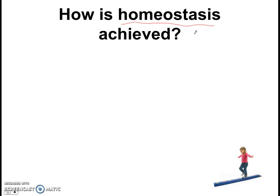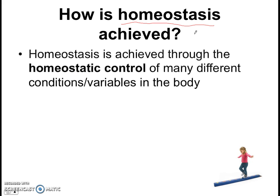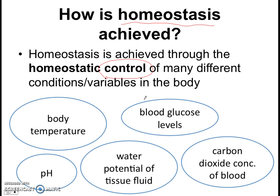The simple answer is that homeostasis is achieved through homeostatic control — controlling the many different conditions and variables in our body. For example, our body temperature, our blood glucose levels, our water potential, the pH, the concentration of carbon dioxide dissolved in the blood. All of these conditions make up the body's internal environment. So by controlling all of these conditions through homeostatic control, we can achieve homeostasis, which is a relatively constant internal environment. The key phrase here is homeostatic control of the many different conditions in our body.